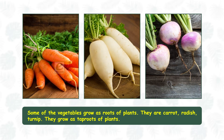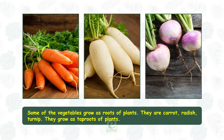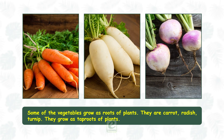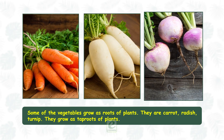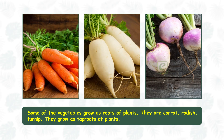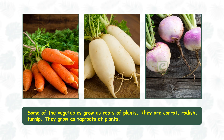Some of the vegetables grow as roots of plants. They are carrot, radish, and turnip. They grow as tap roots of plants.